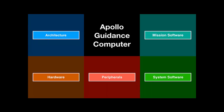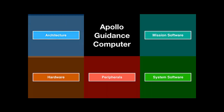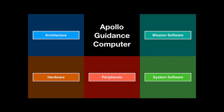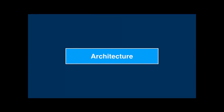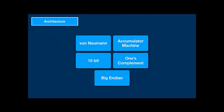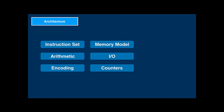To understand how the Apollo Guidance Computer does all this, we'll look at its architecture, the hardware implementation, some of its interesting peripherals, the system software, and the mission software. The architecture of the AGC can be described as a von Neumann accumulator machine with 15-bit, one's-complement, big-endian arithmetic. We'll talk about the instruction set, the arithmetic model, instruction encoding, the memory model, I/O operations and counters, and finally the interrupt model.